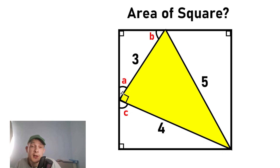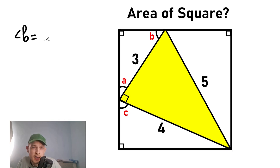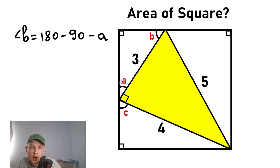First of all, let's consider this triangle on the top left side. We know this is angle A, this is angle B, this is a right angle, and basically the sum of all of these angles equals 180. Right now let's find angle B from this triangle. Angle B equals 180 minus 90, because this is a right angle, minus angle A. This is according to the top left triangle.